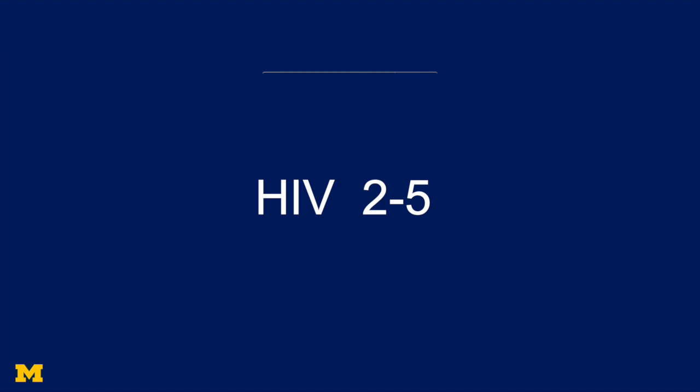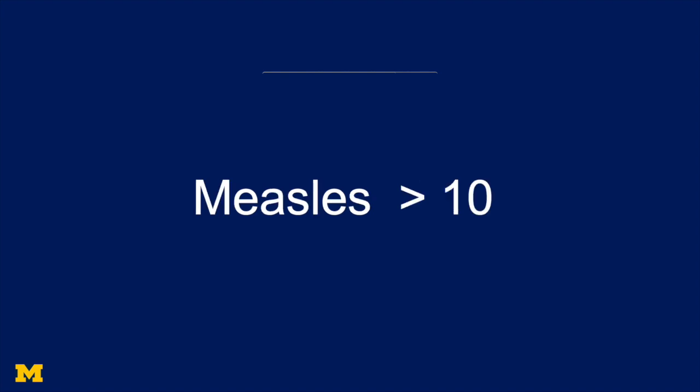R0 is something you can compute. So for HIV, R0 is estimated at two to five. For polio, four to seven. And for the measles, R0 is bigger than 10.